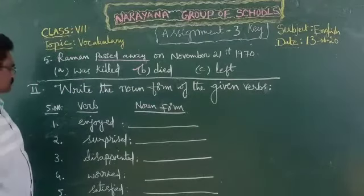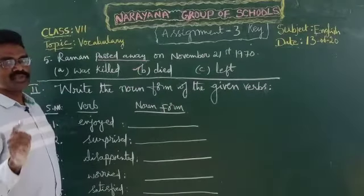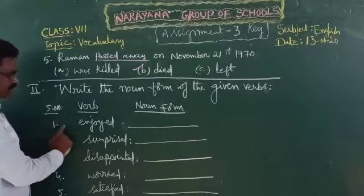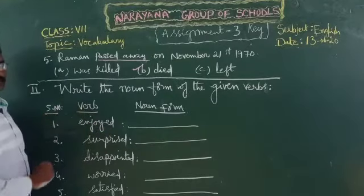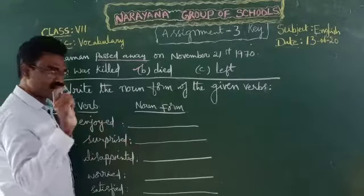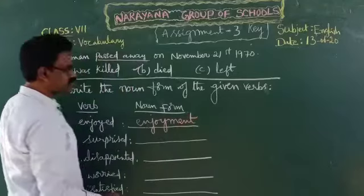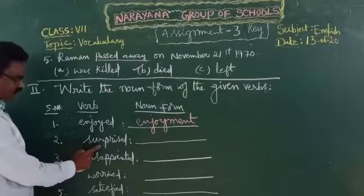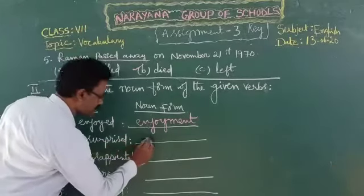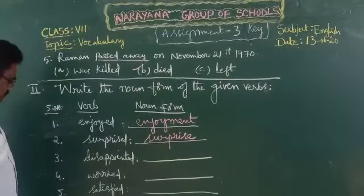Now let us see Roman numeral two: Write the noun form of the given verbs. Five verbs are given and you have to write the noun forms. Serial number 1: the verb 'enjoyed' — the noun form is 'enjoyment.' Number 2: the verb 'surprised' — the noun form is 'surprise.'